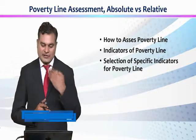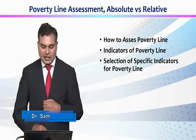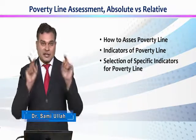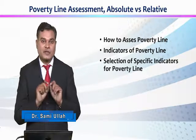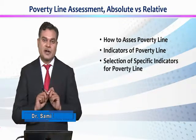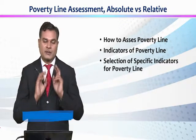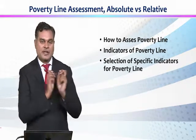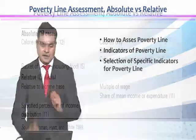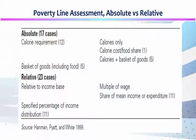कौन से indicators best हैं और कौन से best नहीं हैं — number one and number two. Among different indicators we have to use some specific indicators for poverty line, in terms of absolute poverty and for relative poverty. उसके लिए we have a comprehensive table जो हमें एक picture दे रहा है।